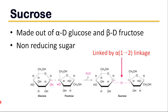The next abundant carbohydrate in the food industry is lactose. The main carbohydrate contained in milk is lactose. Lactose is formed by linking beta-D galactose and beta-D glucose with a beta-1,4 linkage. Sucrose is a non-reducing sugar, but lactose is a reducing sugar.